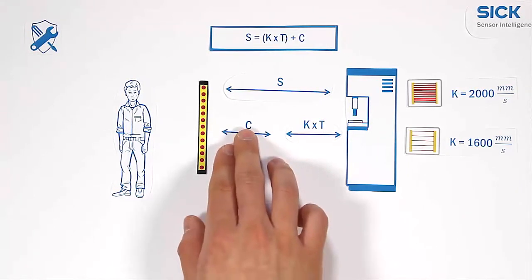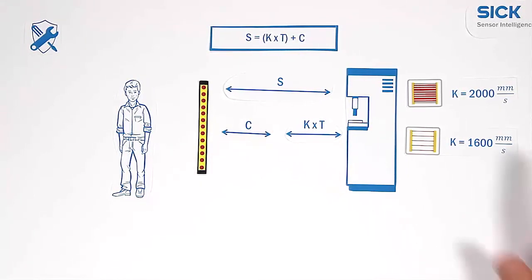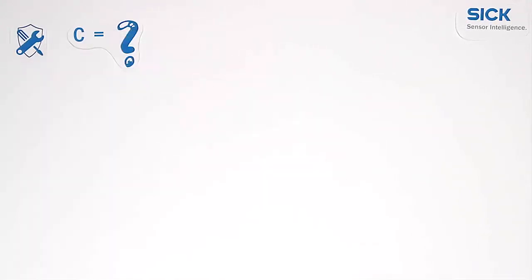The fixed intrusion distance C has to be added. What does C actually mean?